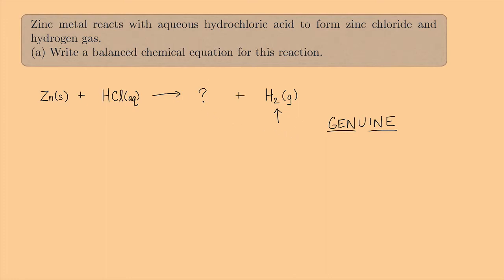Now what about zinc chloride? Chlorine has an oxidation state of negative one, but what about zinc? What's the oxidation state of zinc? If we know that, we can figure out if this is ZnCl, ZnCl₂, ZnCl₃, or something else. To figure out the oxidation state of zinc, let's look at the periodic table and make an educated guess.